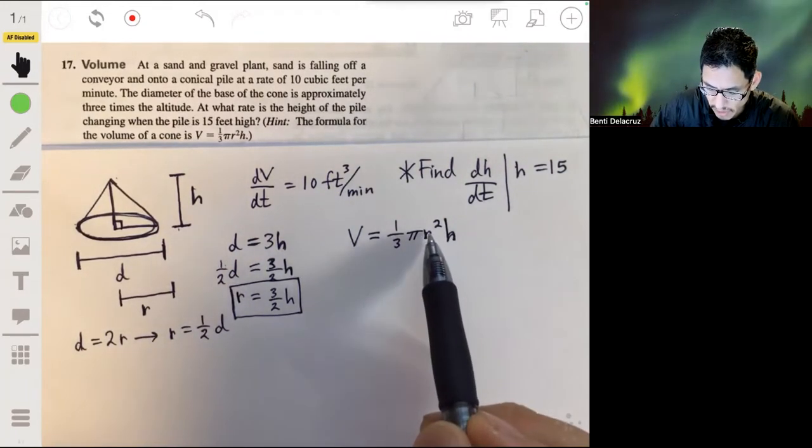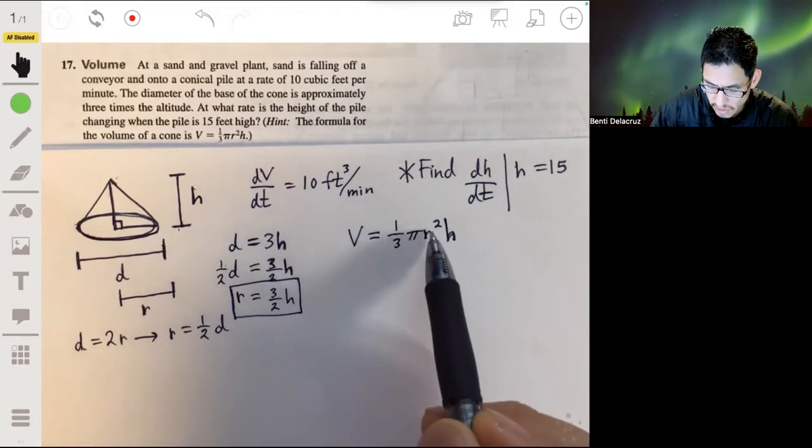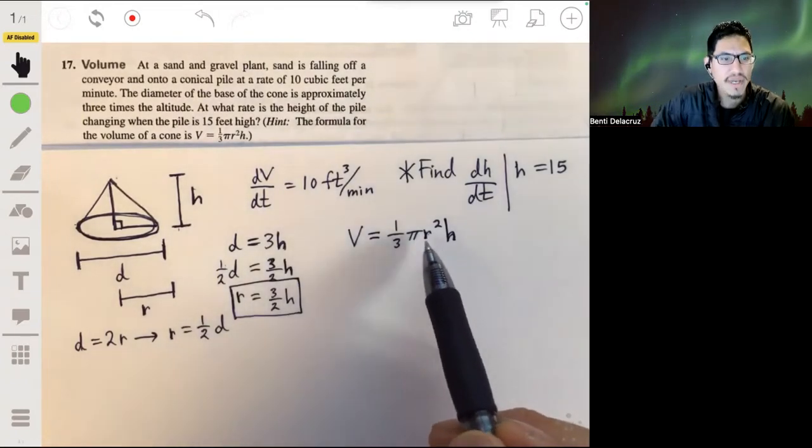Now, here again, we have a way to represent r in terms of height. So to make this even simpler, let's rewrite the radius in terms of height.